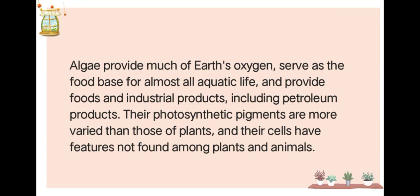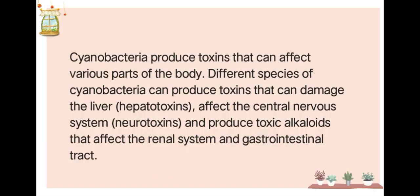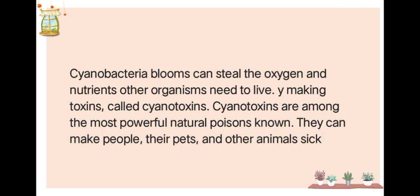Next, cyanobacteria. Cyanobacteria produce toxins that can affect various parts of the body. Different species can produce hepatotoxins that damage the liver, toxins that affect the central nervous system, and toxic alkaloids that affect the renal system and gastrointestinal tract. Cyanobacteria blooms can steal the oxygen and nutrients other organisms need to live, making toxins called cyanotoxins. Cyanotoxins are among the most powerful natural poisons known; they can make people, their pets, and other animals sick or even cause death.